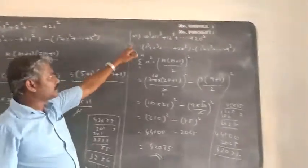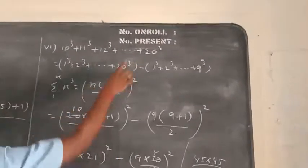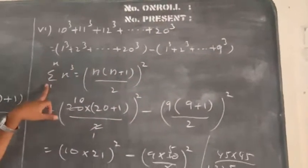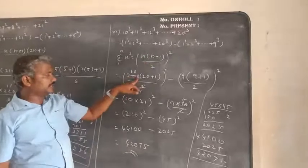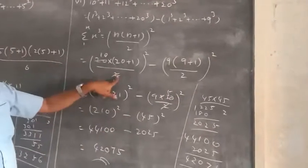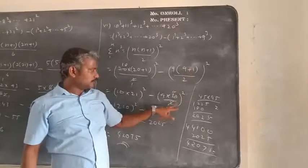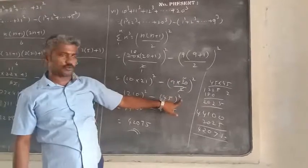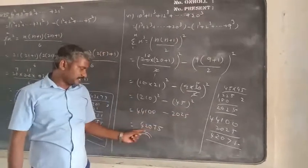Next one, sixth sum: 10 cube plus 11 cube plus 12 cube plus etc. plus 20 cube. So write as 1 cube plus 2 cube plus etc. plus 20 cube, minus 1 cube plus 2 cube plus etc. plus 9 cube. Use sum of cubes of n natural numbers formula: n into n plus 1 by 2, whole square. So n value 20: 20 into 20 plus 1 by 2 whole square, minus 9 into 9 plus 1 by 2 whole square. That is 210 whole square minus 45 square. 210 squared minus 45 squared gives the answer 42075.